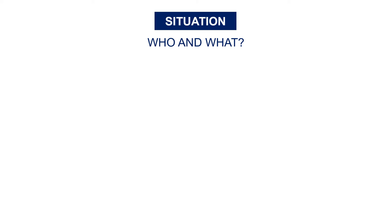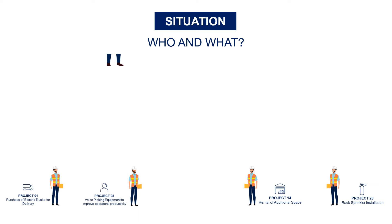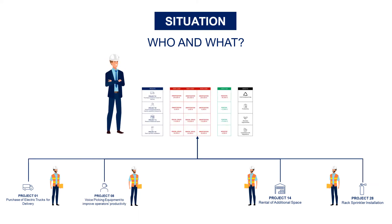Who is involved and doing what? Each of the warehouse managers reporting to you are sending budget applications. You combine them and analyze the costs, return on investment, and non-financial benefits. The question is: how can you use Python to automate these next steps?